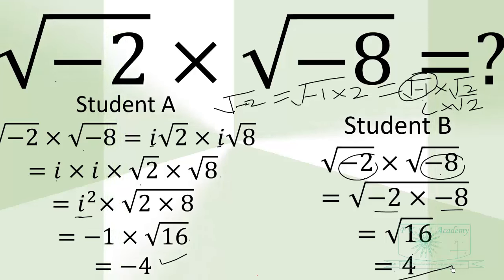But we know that these are not real numbers. Square root of a number that is negative is not a real number. So this only applies to real numbers. So Student B is not correct. Student A is correct.